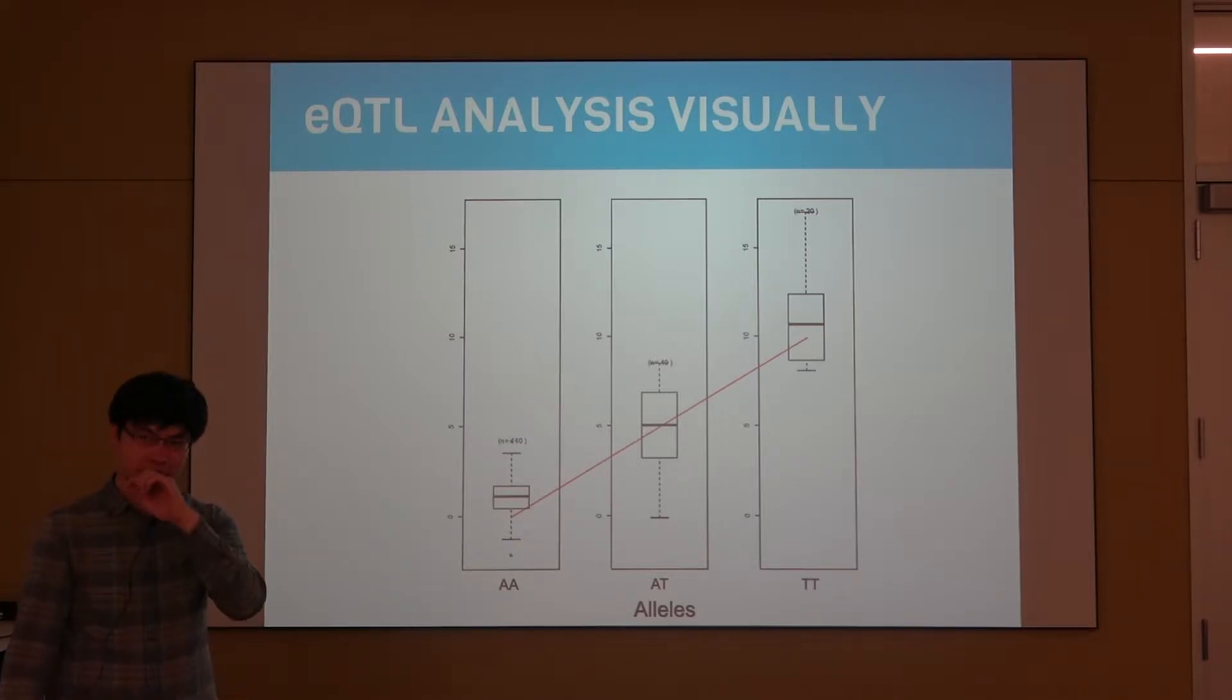This is really what we're trying to find visually. It could be an inverse relationship as well where the gene expression goes down with the number of alleles you have, but all in all we're trying to find a linear relationship between the number of alleles and the gene expression.